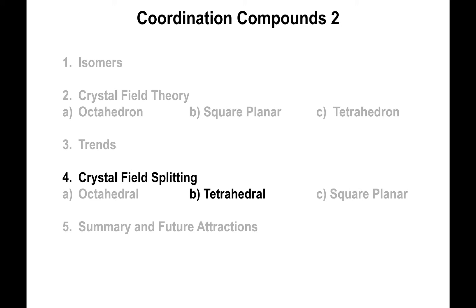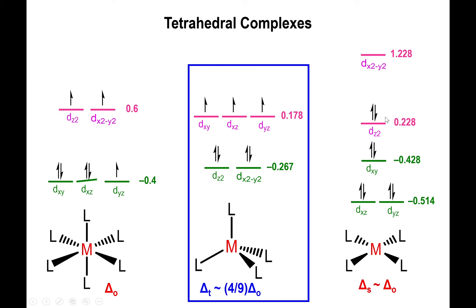Let's talk about the crystal field splitting of tetrahedral structures and square planar structures. The tetrahedral structure is a little bit less than half the value of the delta octahedral value. The energy levels are labeled in terms of delta octahedral, so this is negative 0.267 delta octahedral and this is 0.178 delta octahedral. To get the proper energy value, you input the delta octahedral value for the complex based on the identity of the ligands.